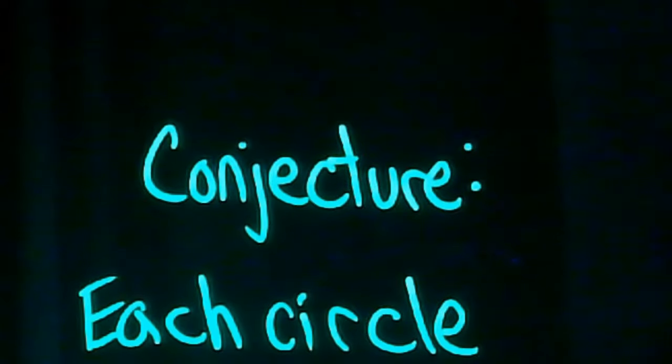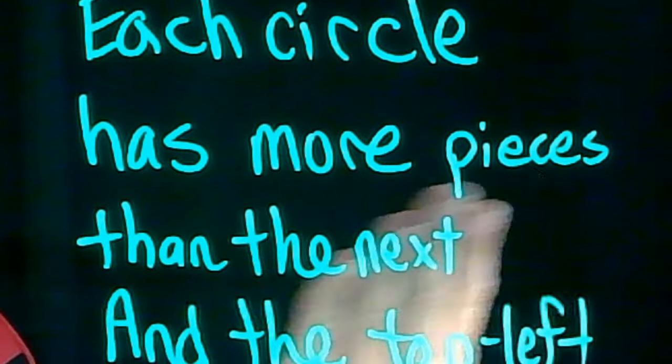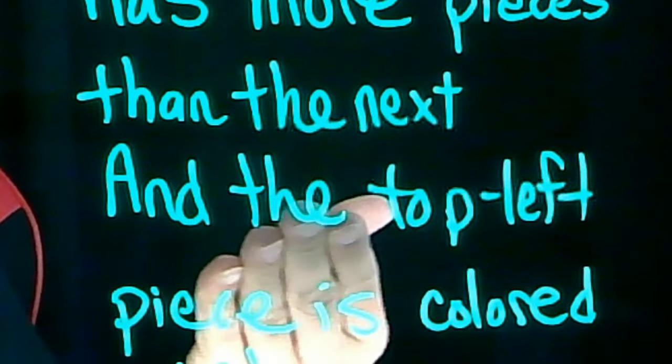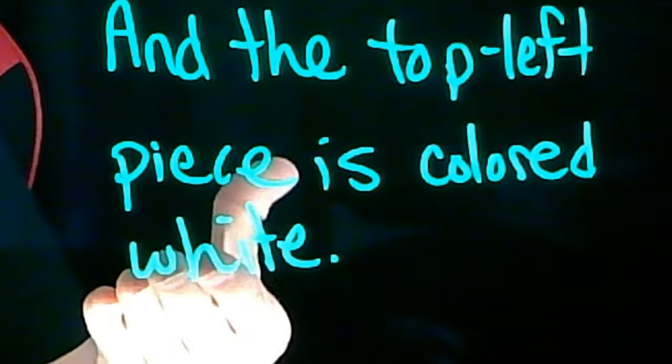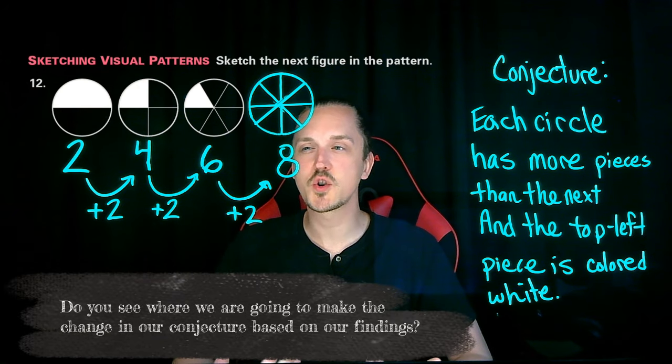Take a quick moment to note our thinking. We had originally made the conjecture that each circle has more pieces than the next, and the top left piece is colored white. Now we do have some new findings here. Do you see where we're going to make the change in our conjecture based on what we found?